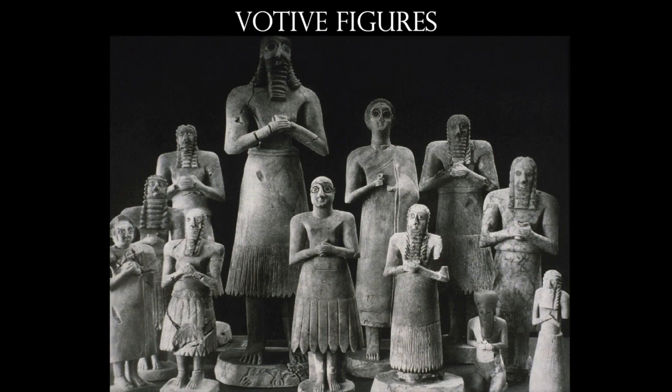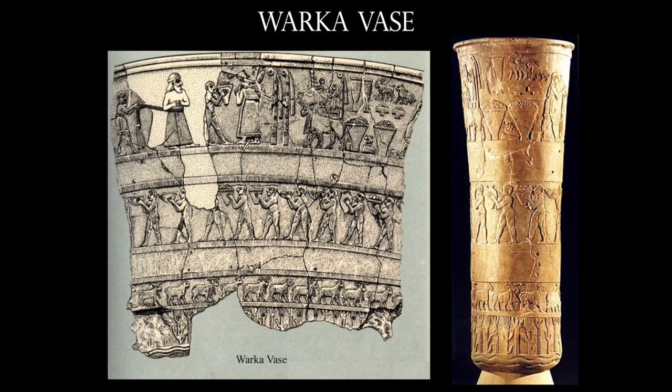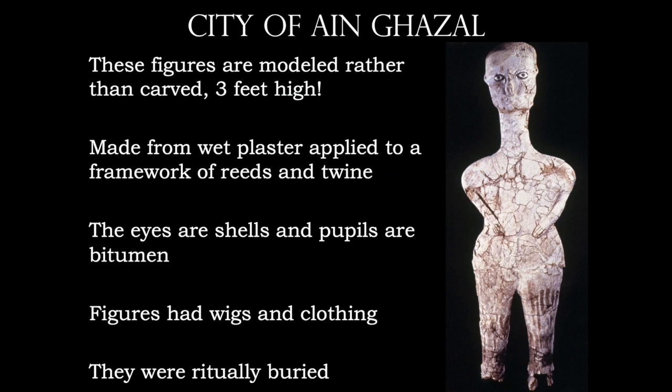We also had the Warka Vase, which is the first time we have a narrative in art history. Besides Jericho, we have the city of Ain Ghazal, where we get figures roughly three feet in height — nearly 40 have been found. They're made completely differently than prehistoric sculpture: prehistoric sculpture uses the subtractive method, carving away unwanted pieces, whereas here we build up a network of reeds and twine, wet plaster applied on top, with shell eyes and bitumen pupils.